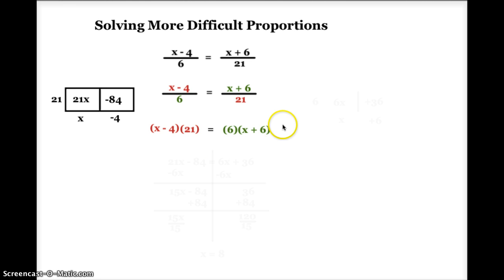I've also set up a generic rectangle on the other side of the equation to simplify that as well. In this problem, I'm going to take 6 and multiply that times x plus 6. 6 times x is just going to be 6x, and 6 times positive 6 is going to be positive 36.